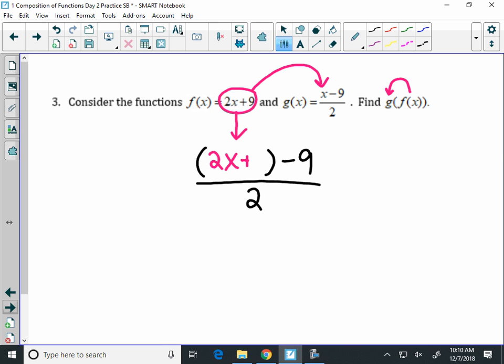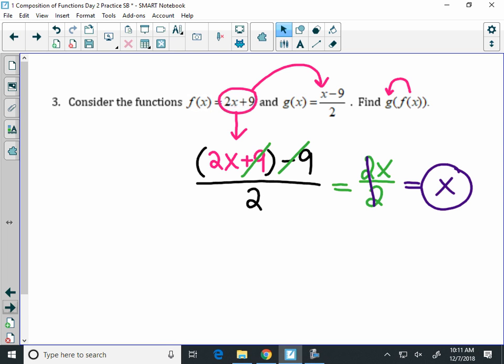Alright, so now I have 2x plus 9, minus 9, over 2. So when I simplify this, notice that positive 9 and negative 9, they cancel out because they equal 0. So you have 2x over 2, and 2x over 2 simplifies to just be equal to x. So that's your final answer here for number 3.